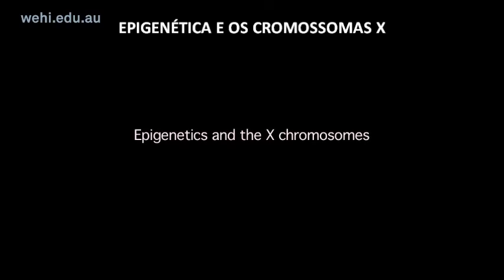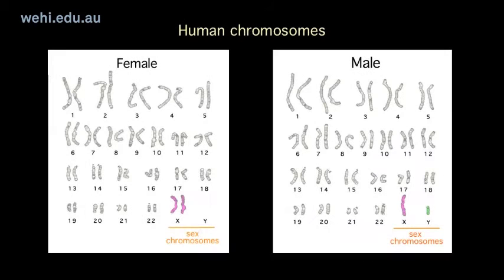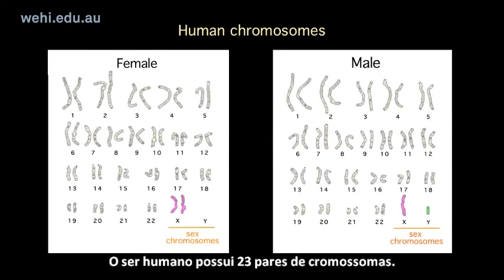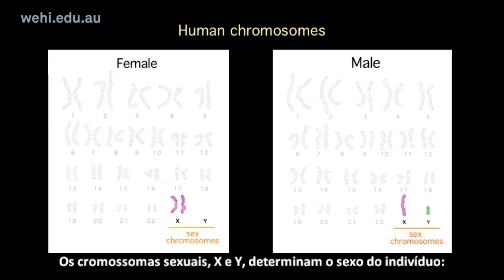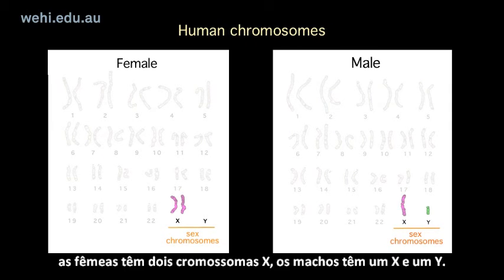Epigenetics and the X chromosomes. Humans have 23 sets of chromosomes. The sex chromosomes, X and Y, determine the sex of an individual. Females have two X chromosomes, while males have one X and one Y chromosome.